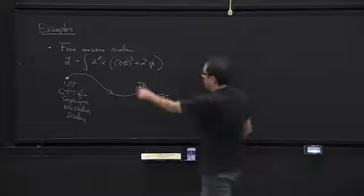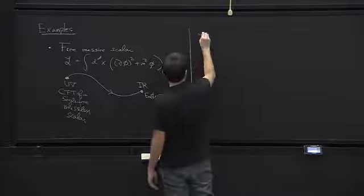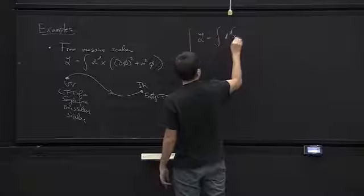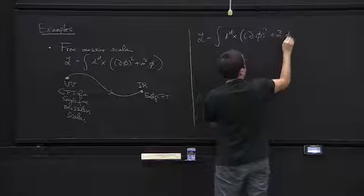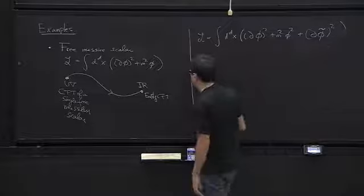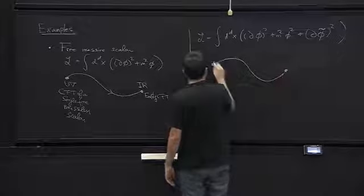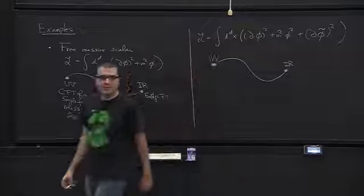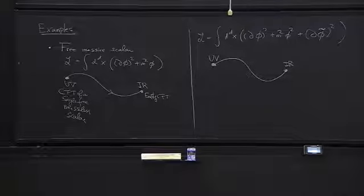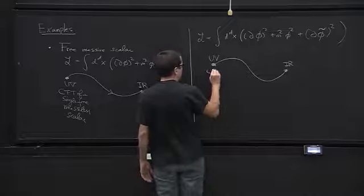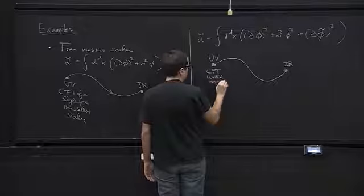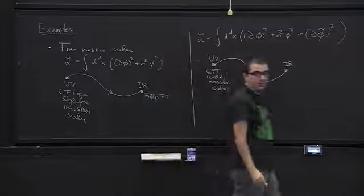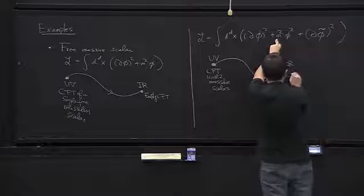Another equally trivial example: one massive scalar and one massless scalar. At very high energies we don't care about the mass, so we have a CFT with two massless scalars. In the infrared, the massive one decouples completely, so we have a CFT with one massless scalar.